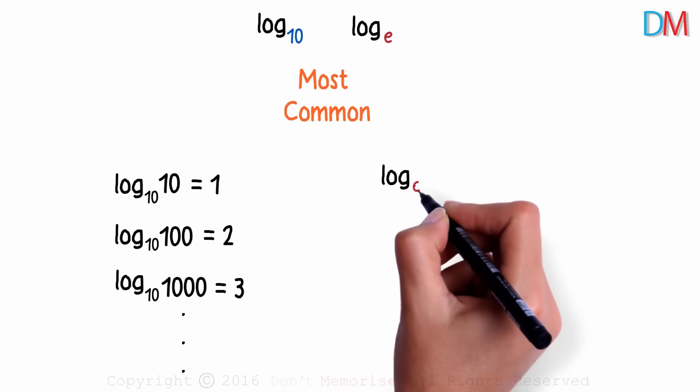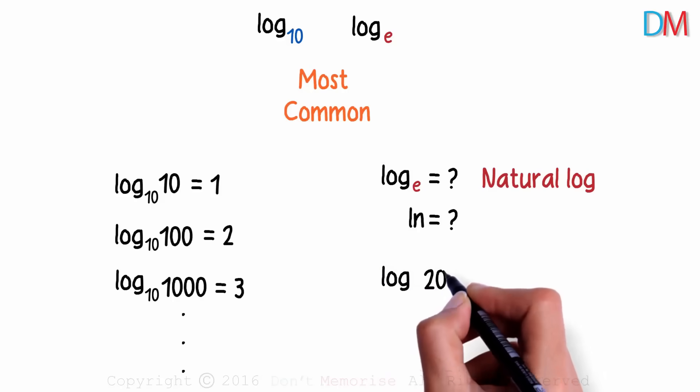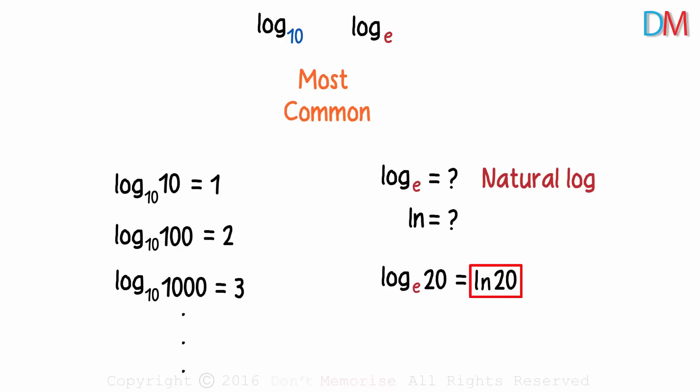But log to the base E is what I am deeply interested in. It's called the natural log and it's also written as Ln. Yes, log to the base E is also written as Ln. So log 20 to the base E can be written as Ln of 20, the natural log of 20.